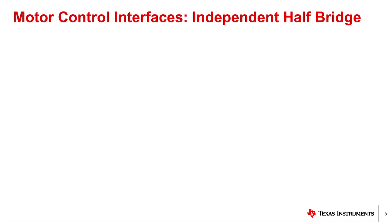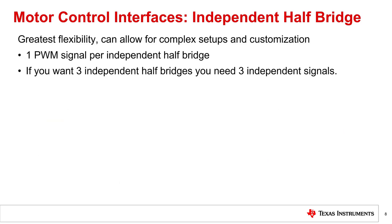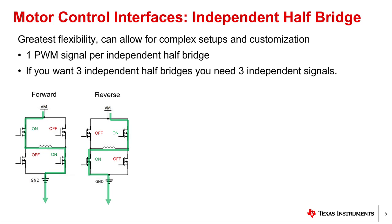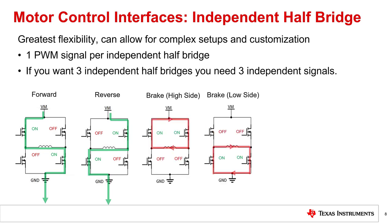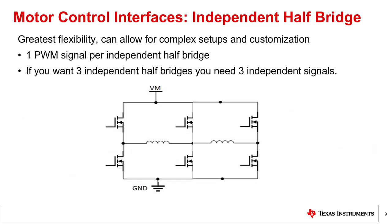The final interface is independent half-bridge control. This interface allows for the most control and flexibility when setting up your system, at the cost of possibly increased complexity. Each half-bridge needs to have its own PWM signal in order for it to be fully independent. This means that if you want two independent half-bridges, you need two independent PWM signals; if you want three half-bridges to be fully independent, you need three fully independent PWM signals, and so on. This interface controls each part of the half-bridge separately, typically allowing for forward, reverse, the choice of either high side or low side braking, and both coast functions. Additionally, independent half-bridge control might be ideal for driving loads that need to be separated, such as switches.